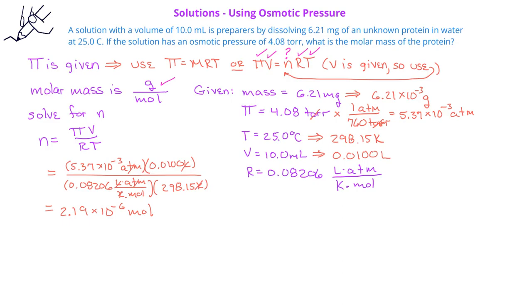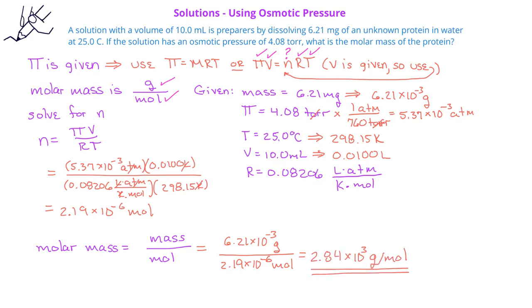Now that we have both the mass of the protein in grams and the moles of the protein, we can take the mass divided by the moles and get the molar mass of this protein. In this case, we get a value of 2.84 times 10 to the third grams per mole. This seems like a large molar mass, but proteins are very large molecules, so it's not really unusual to have a molar mass in the thousands of grams per mole for a protein.